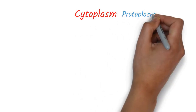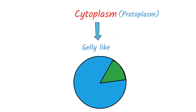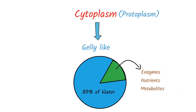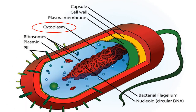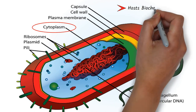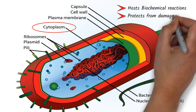Cytoplasm, also called protoplasm, is a jelly-like structure composed of 80% water. The other 20% is composed of enzymes, nutrients, metabolites, and cellular wastes. All cell components are scattered throughout the cytoplasm. Cytoplasm not only hosts the biochemical reactions in the cell, but also protects the cell organelles from damage.